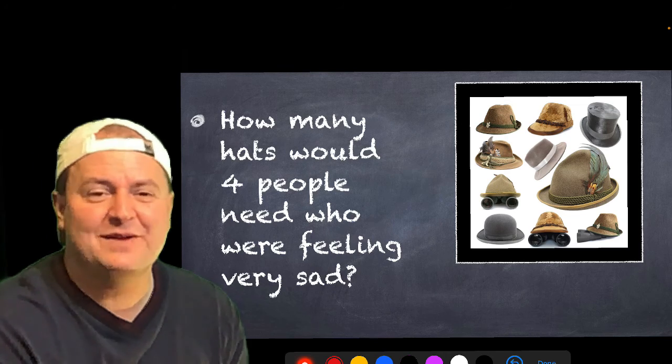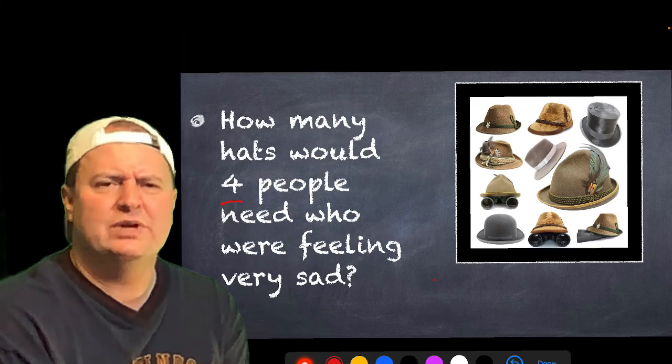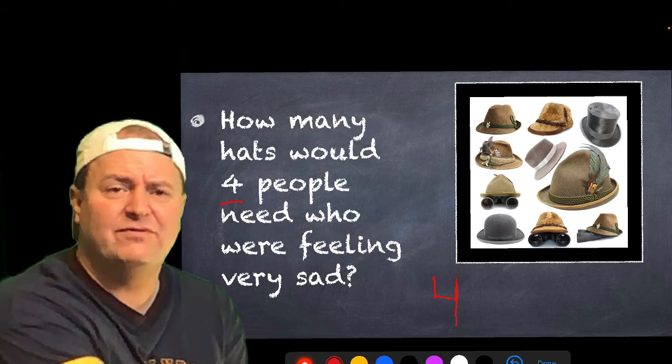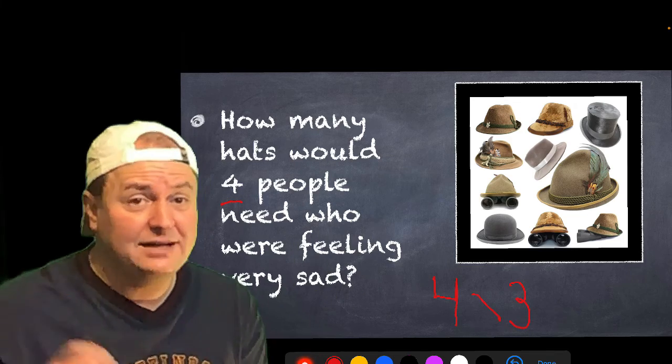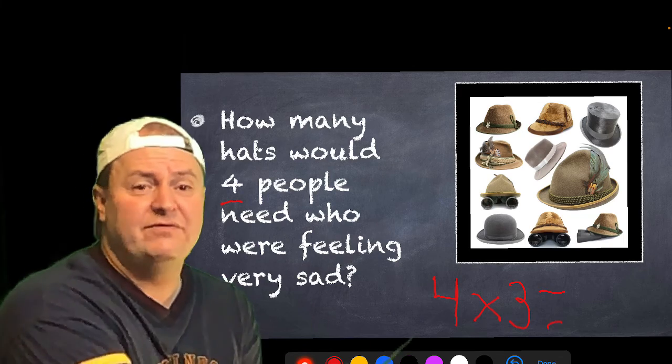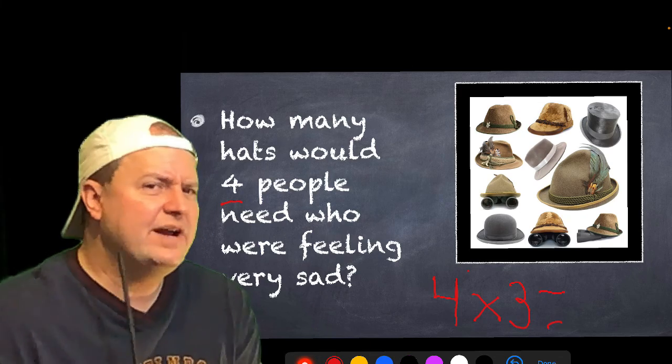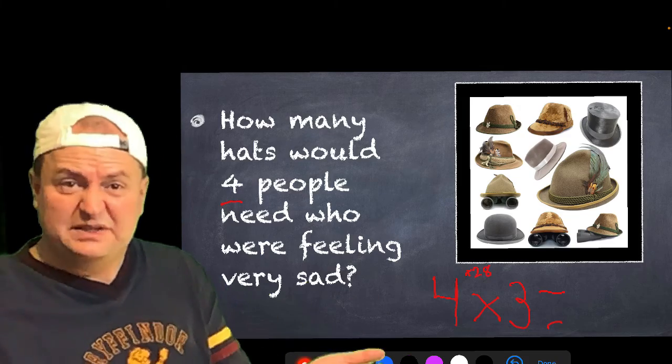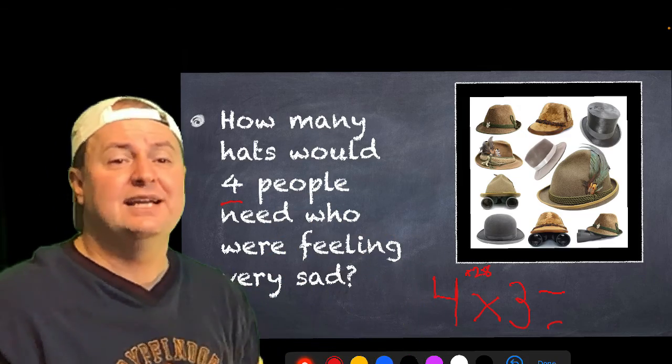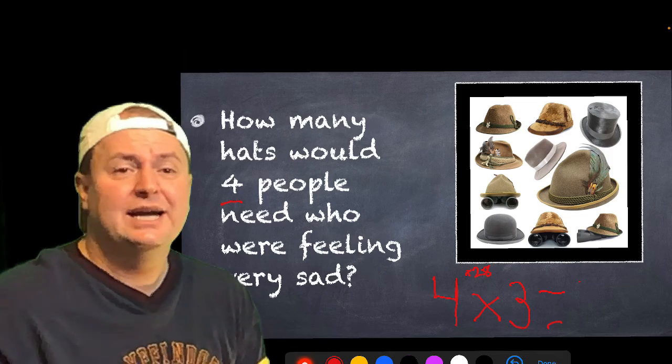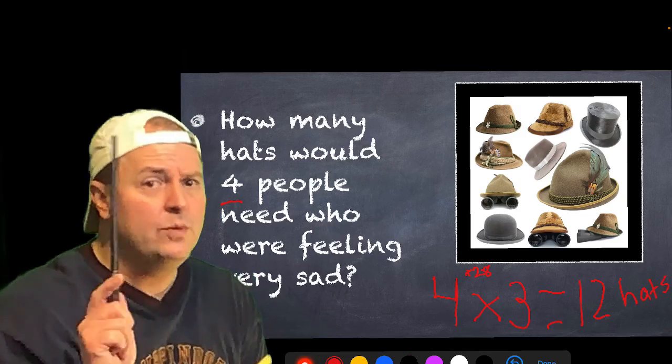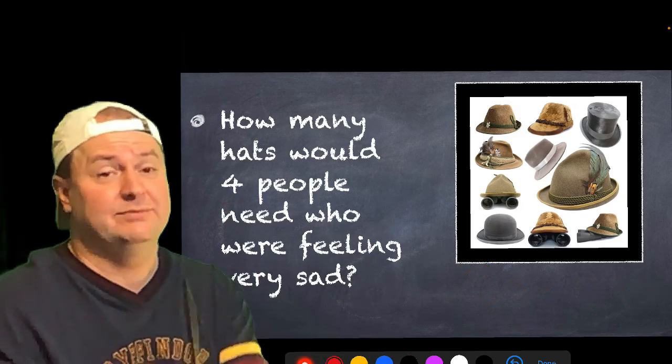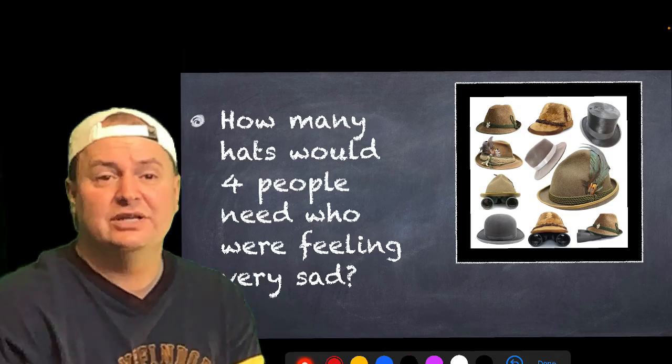All right. Welcome back. So, we're trying to figure out how many four people would need who were feeling very sad. We know that four people, and then we would times that by the number of hats, and they each needed three hats if they were feeling very sad. So, that would be four times three. Now, if I knew four times two, which is pretty simple, it was eight, I could add four more onto that and realize that four times three equals twelve. Twelve what? Twelve hats. No naked numbers. Make sure, I got to quit pointing this at you. It might do something. It might turn you into a toad or something, right?